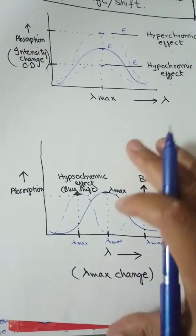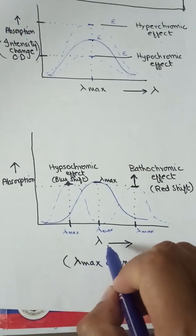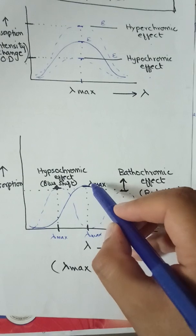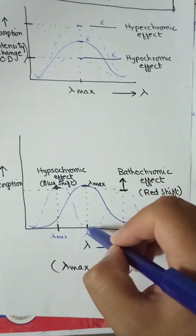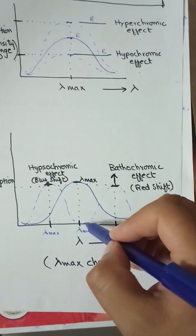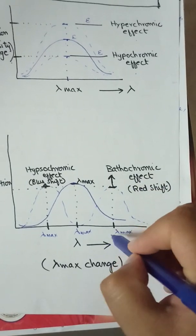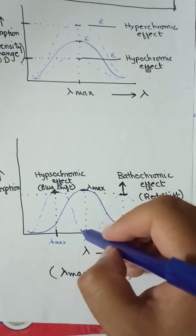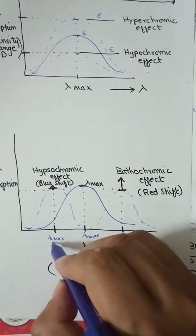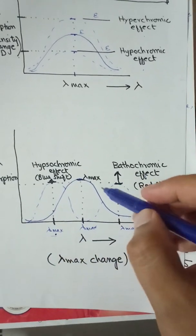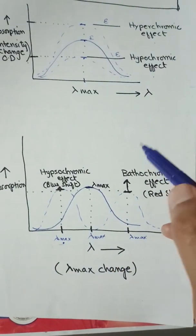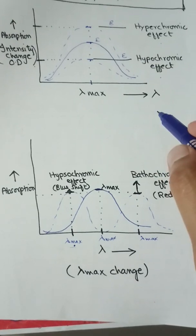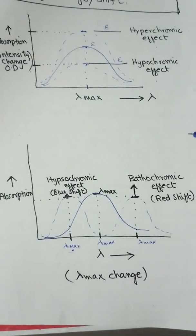For absorption position: on the x-axis is wavelength and on the y-axis is absorption intensity. A compound has its lambda max at a certain position on the x-axis. In the case of bathochromic effect, lambda max shifts towards longer wavelength — this is called red shift. In the case of blue shift or hypsochromic effect, lambda max shifts towards shorter wavelength. In the next video we will study the Woodward-Fieser rule and how we can theoretically calculate the lambda max for certain compounds.